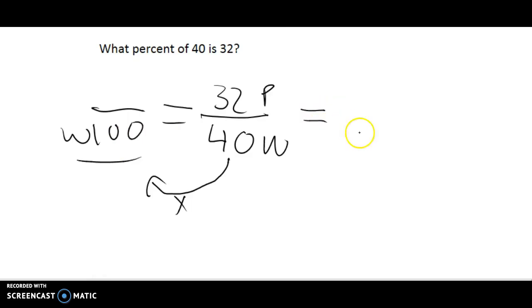Obviously, the 40 is the whole. So I'll put the 40 here. And 32 would be the part. So there's my part, there's my whole. And I still know my whole down here, which is 100. Because it's any percent, you're always going to have 100.